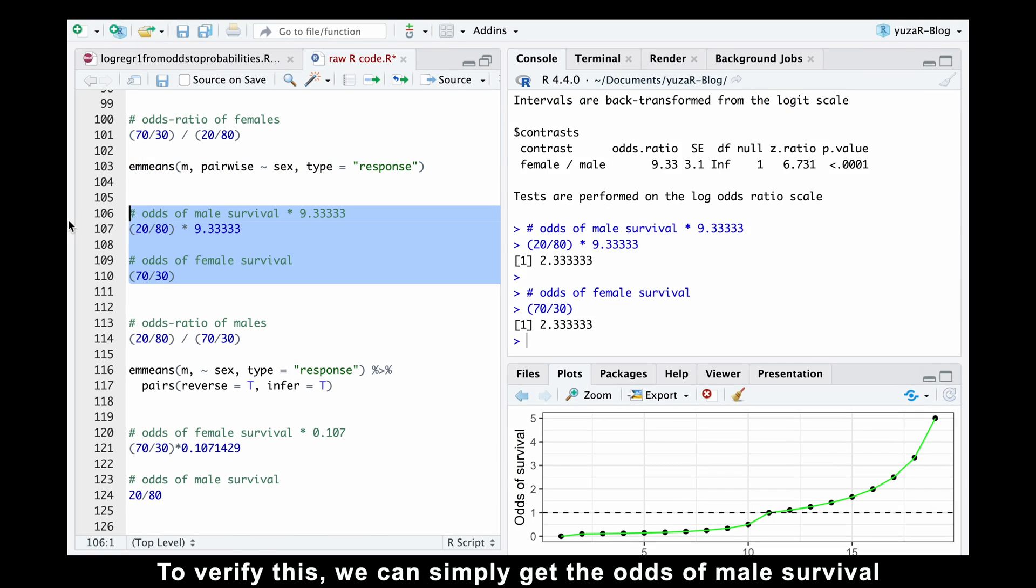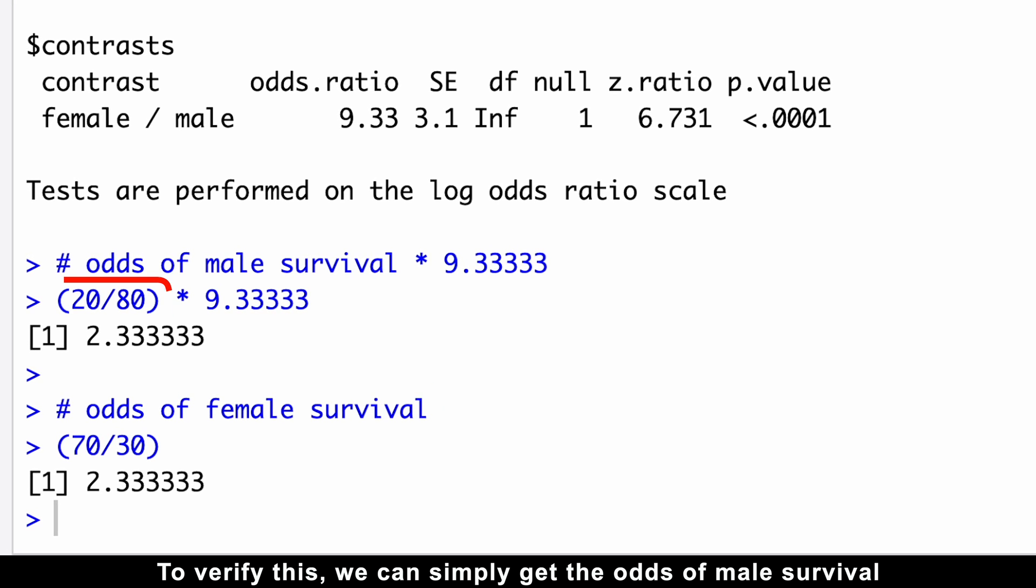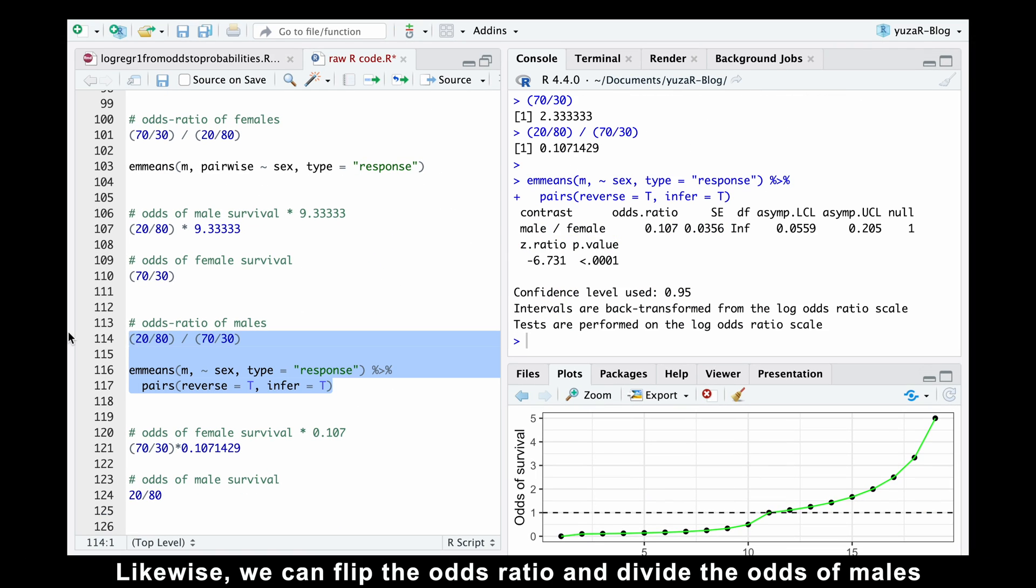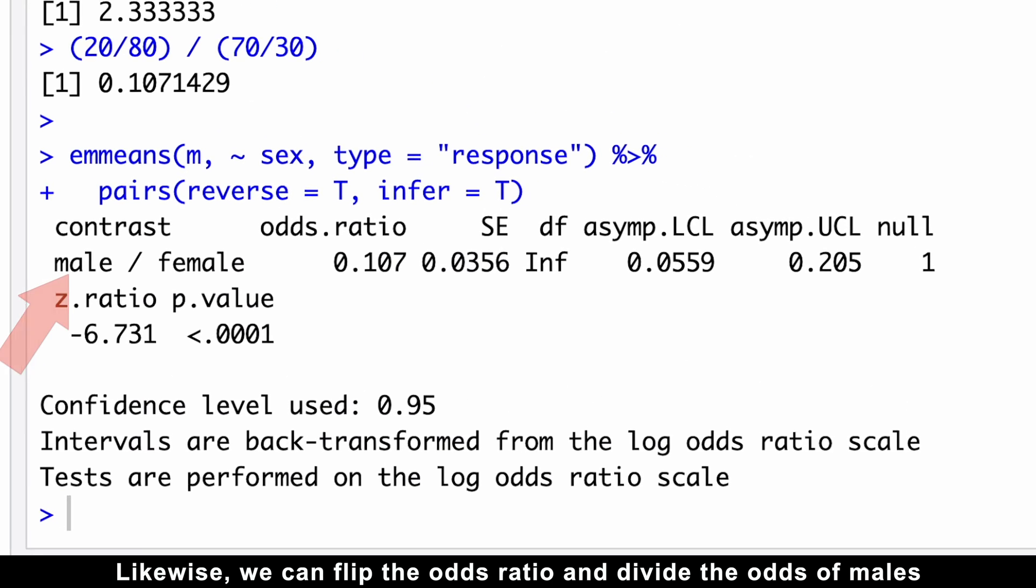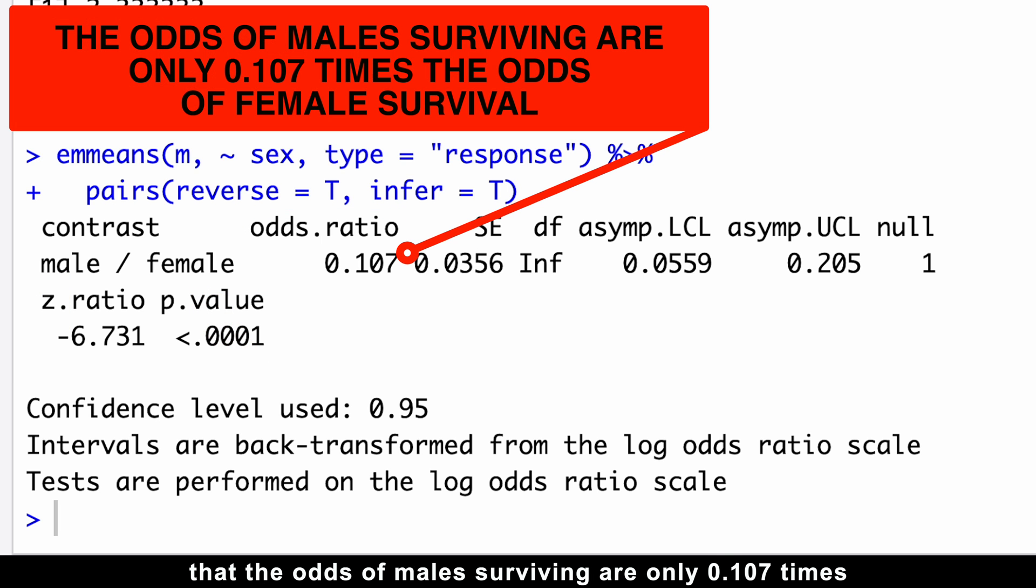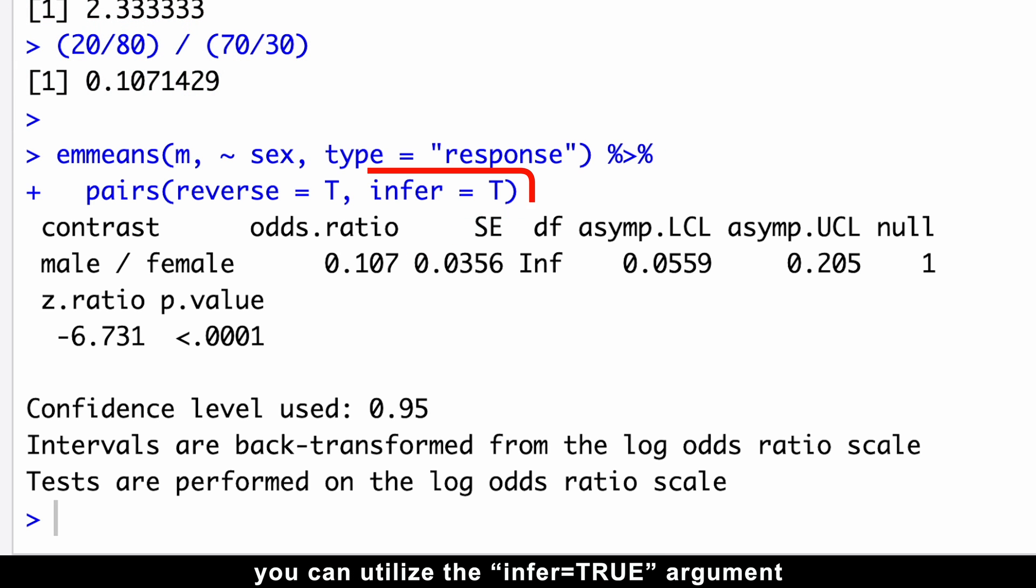To verify this, we can simply get the odds of male survival from the counts and then multiply it by 9.33 to find the odds of female survival. Likewise, we can flip the odds ratio and divide the odds of males by the odds of females. This odds ratio of 0.1 tells us that the odds of male surviving are only 0.1 times the odds of female surviving.